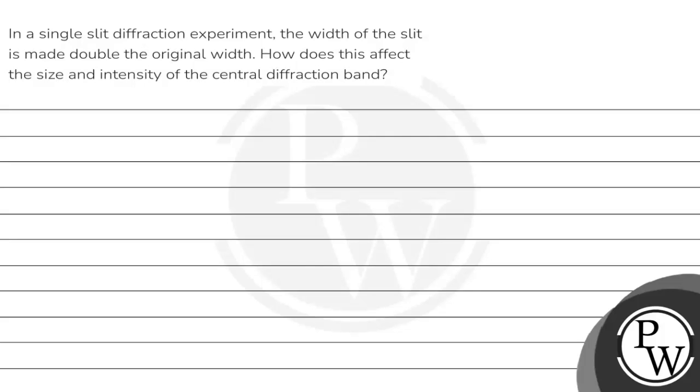Hello, let's see this portion. It says in a single slit diffraction experiment, the width of the slit is made double the original width. How does this affect the size and the intensity of the central diffraction band?